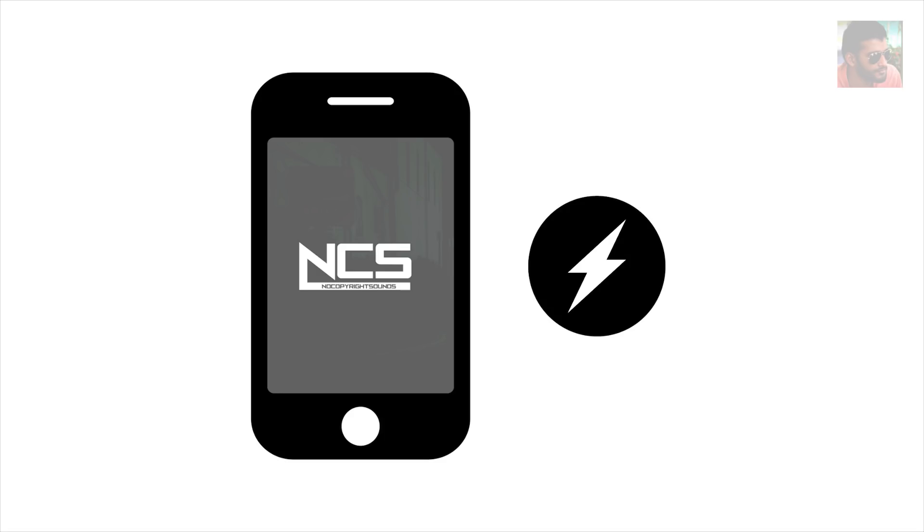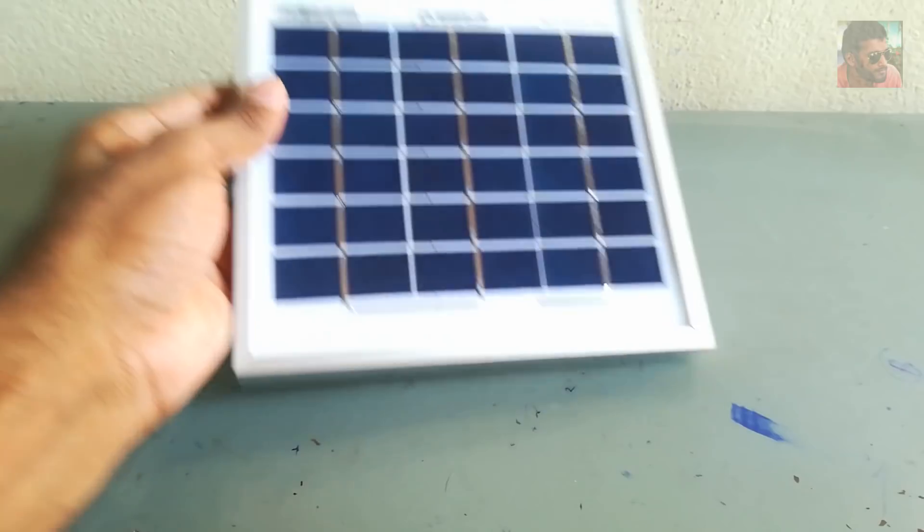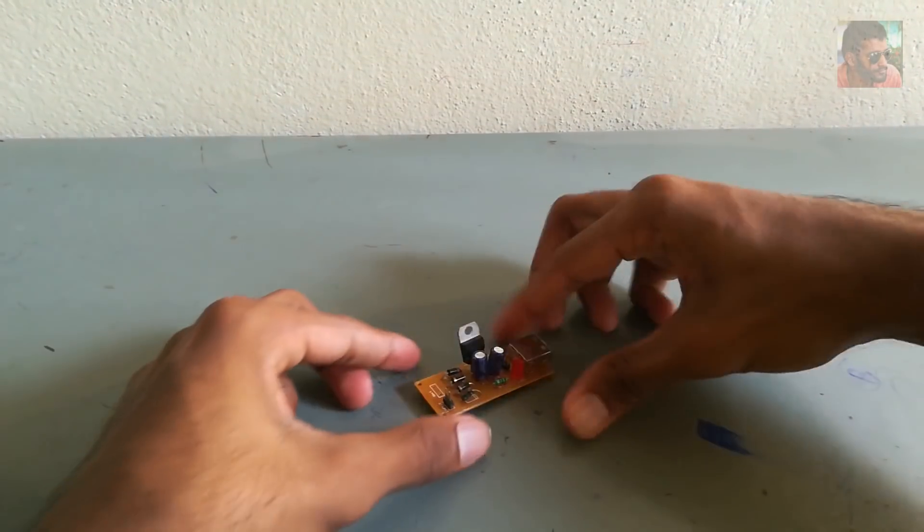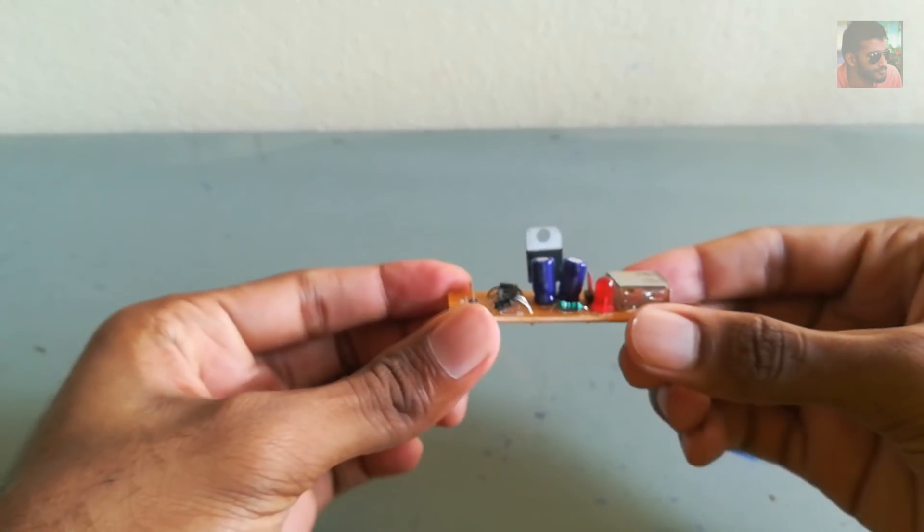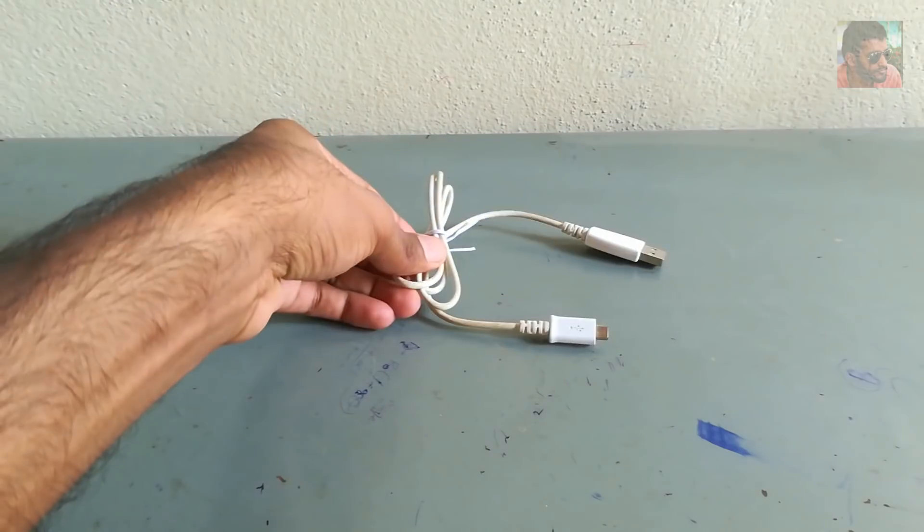Hello everyone, today I'm going to explain how to charge your mobile phone using a solar panel. For this experiment you're going to need a solar panel, a voltage regulating circuit, your charging cable